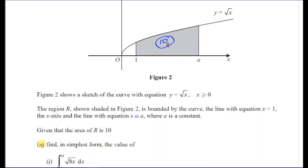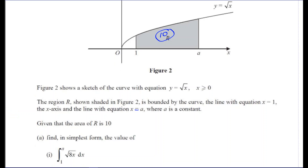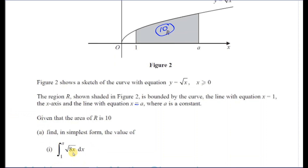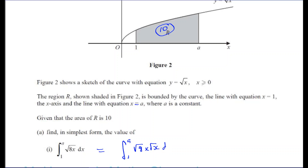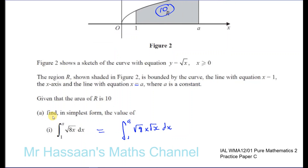Find in its simplest form the value of the integral of the square root of 8 times x between 1 and A. This can be rewritten as the integral between 1 and A of the square root of 8 times the square root of x dx. Any constant, like the square root of 8, can be written outside of the integral.